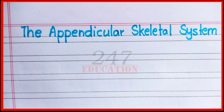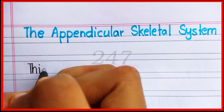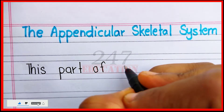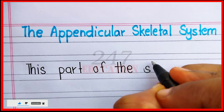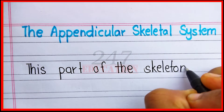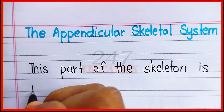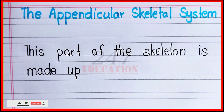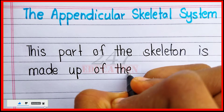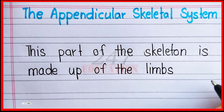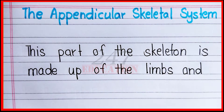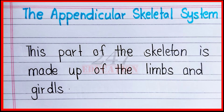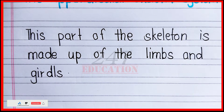Definition of the appendicular skeletal system: this part of the skeleton is made up of the limbs and girdles.